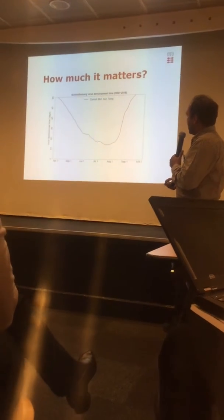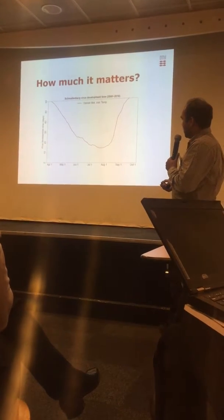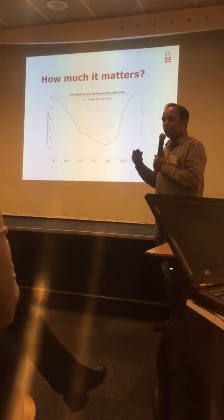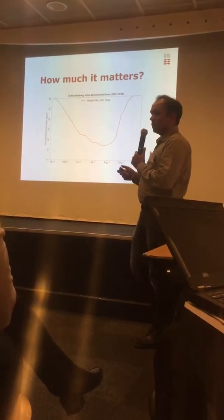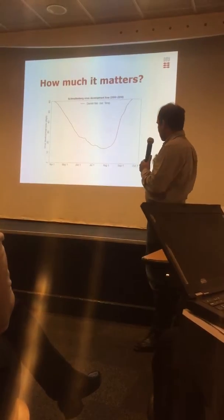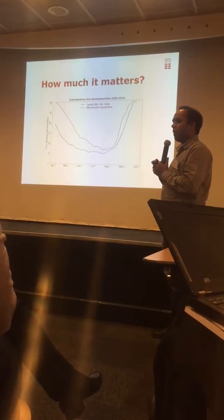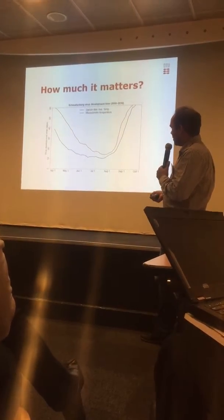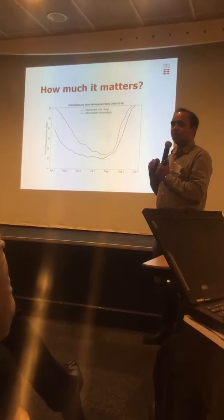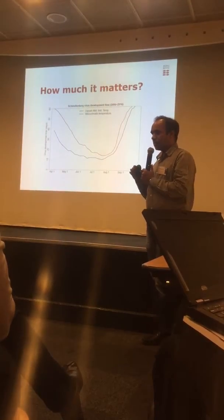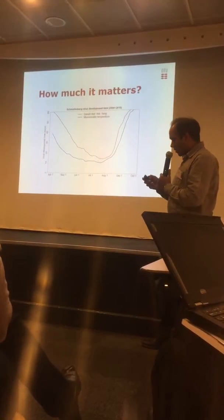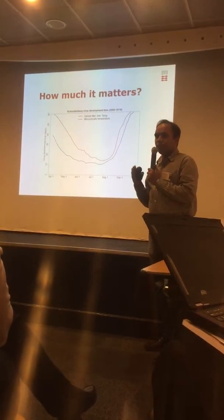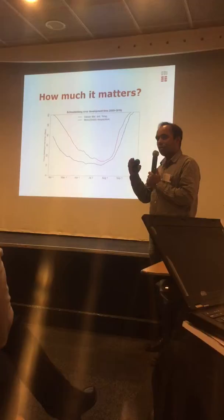It shows that in the first week of April, if an insect takes an infected blood meal, it will take 60 days to develop the virus. But when we use the microclimatic temperature, it shows that it will take only around 40 days — almost two-thirds shorter. One of the most important criteria for any insect-borne disease is the lifespan of the insect.